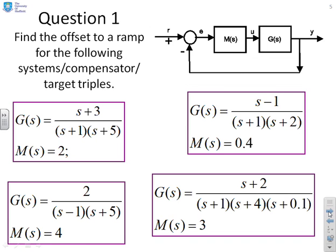First question then. You'll see we've given the standard loop, we've given you four different examples with corresponding G's and M's, and we've said, what is the offset to a ramp? Now is the time to pause before I go on with the solutions.